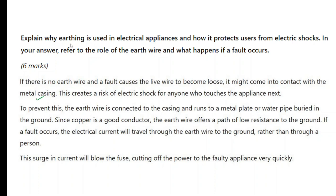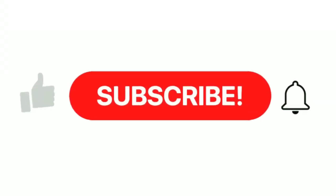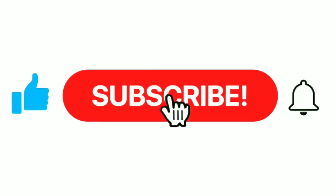Since copper is a good conductor, the earth wire offers a path of low resistance to the ground. If a fault occurs, the electrical current will travel through the earth wire to the ground rather than through a person. The surge in current will blow the fuse, cutting off the power to the faulty appliance very quickly.